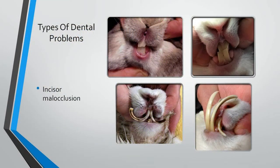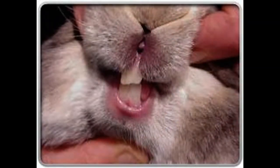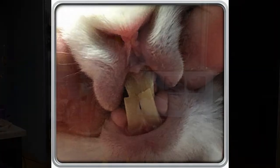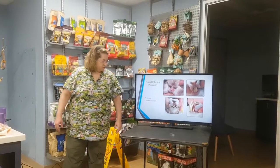We're going to go through some of the types of dental problems. Bunnies can have a kind of a spectrum of issues. Here's some incisor malocclusion. Malocclusion means bad meeting. Here it's very subtle, just a little bit of an angle where it should be straight across. And then as we saw in this picture before, the lowers are in front of the uppers — these are pretty obvious incisor malocclusion.